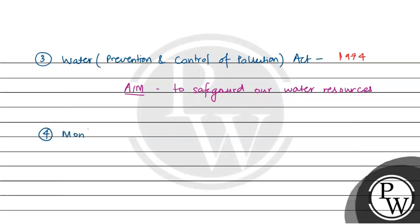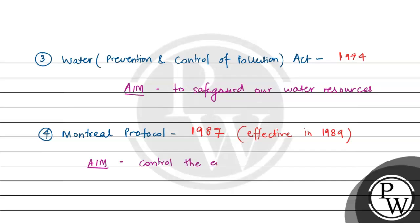Fourth is the Montreal Protocol. This was enacted in 1987, and its main aim was to control the emission of ozone depleting substances.